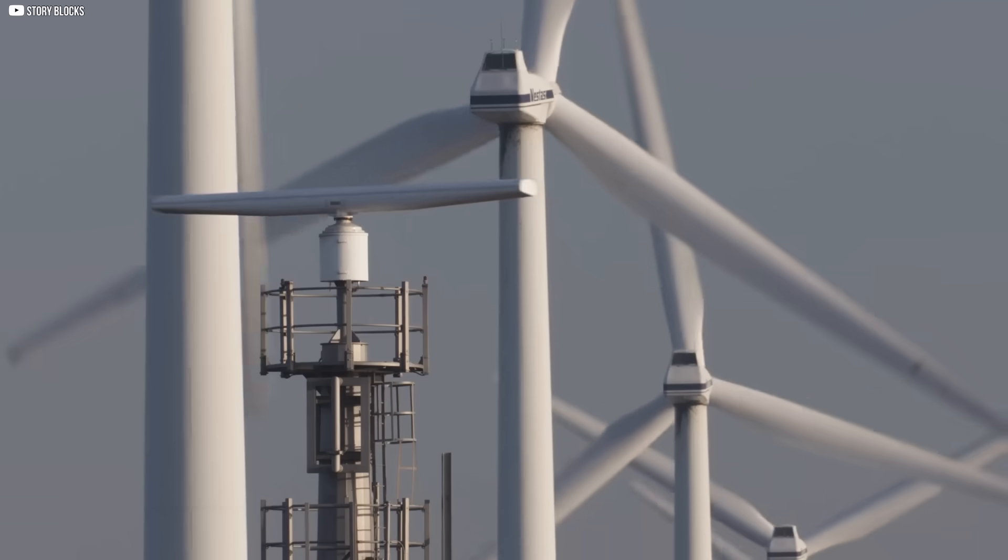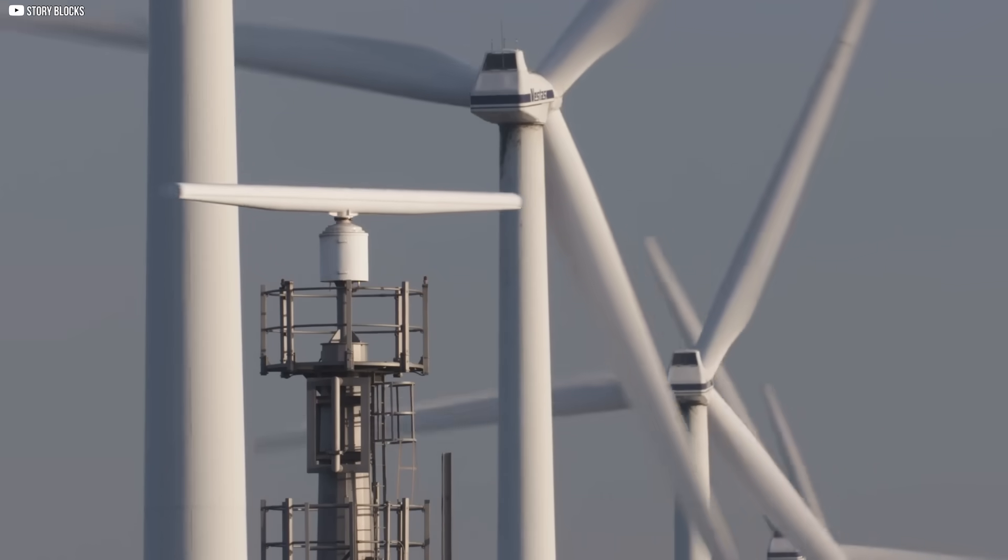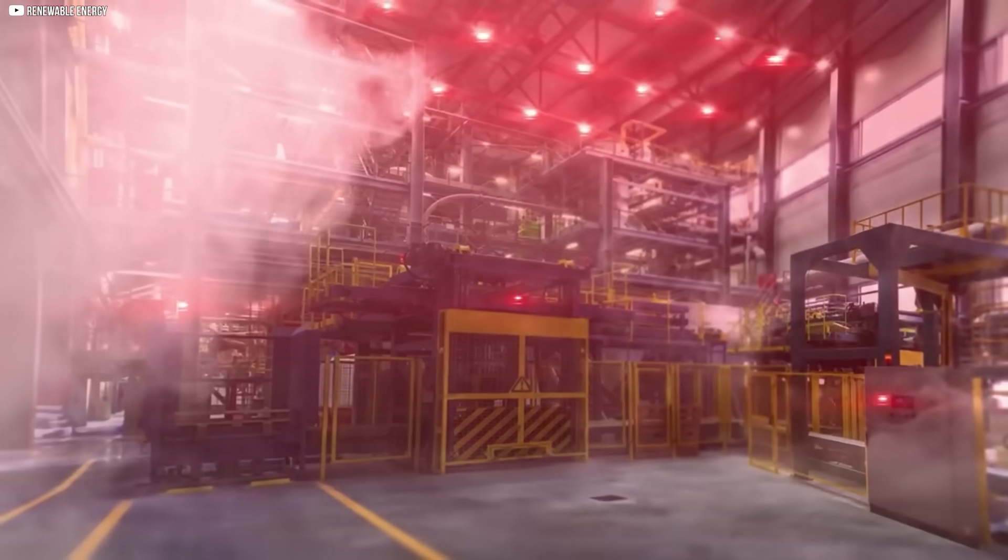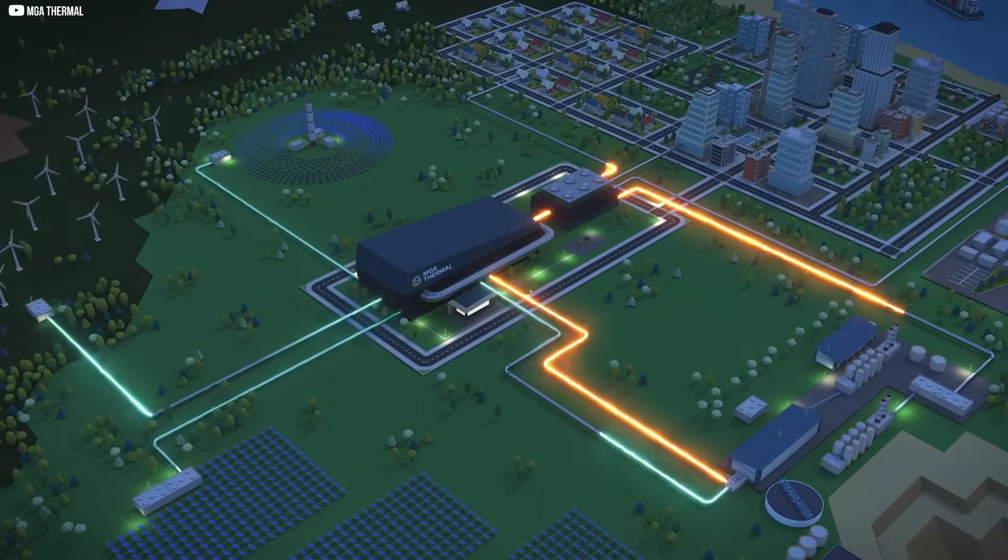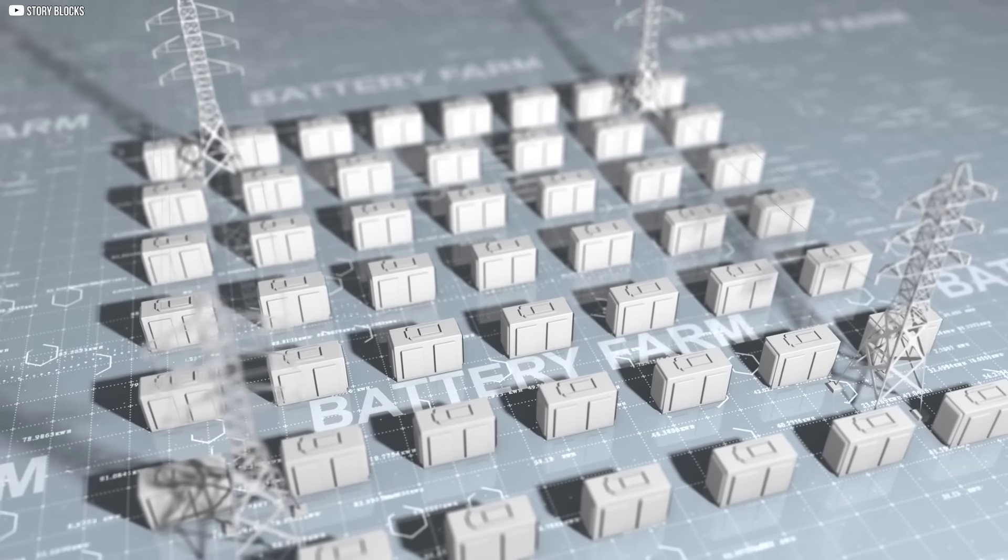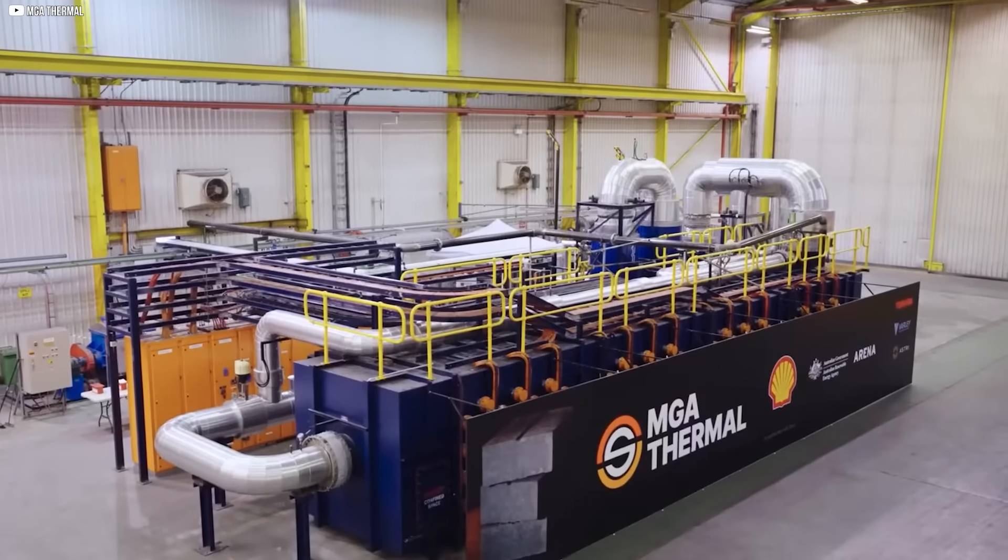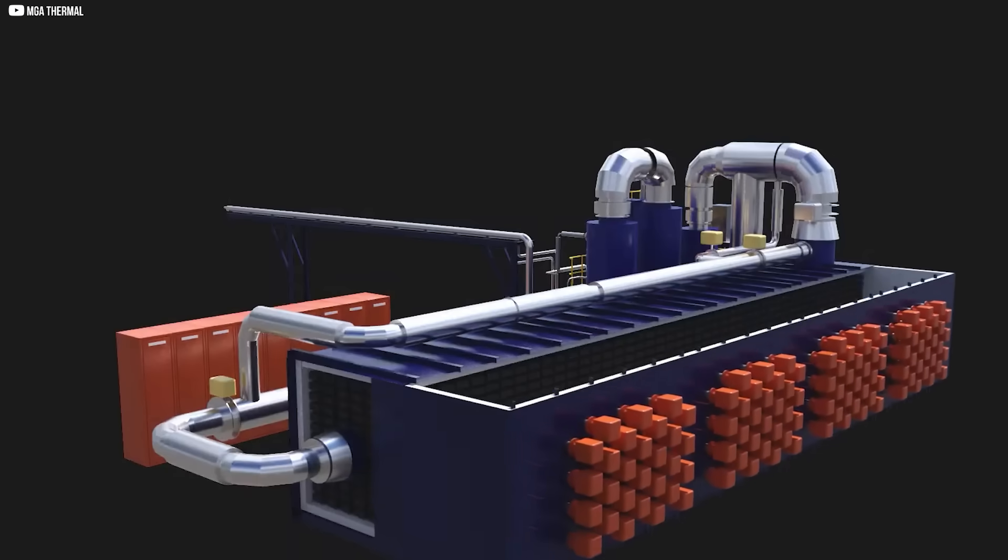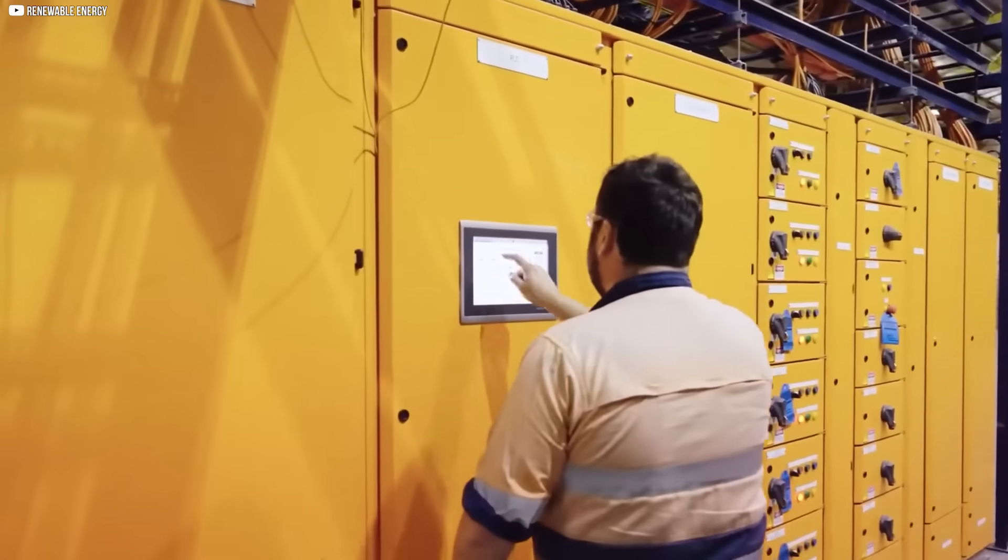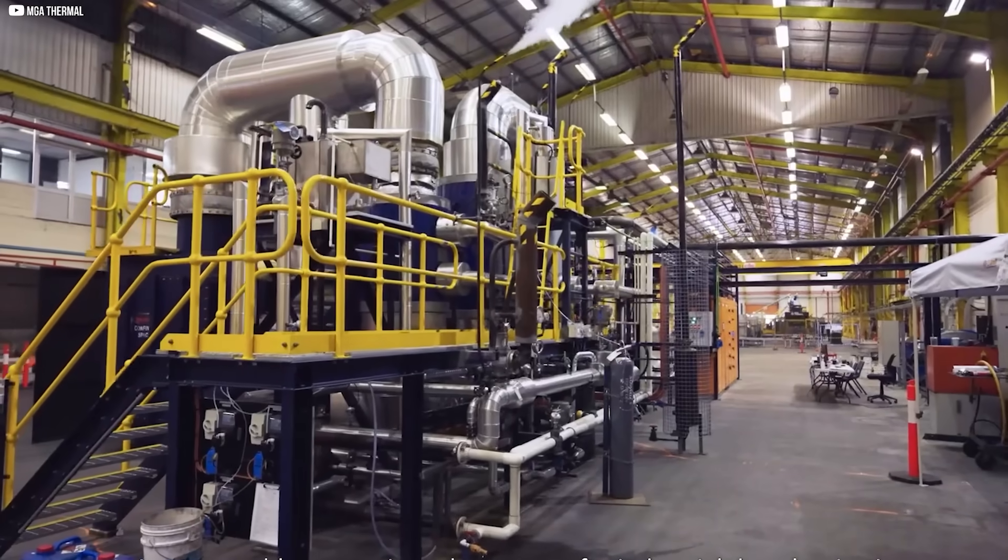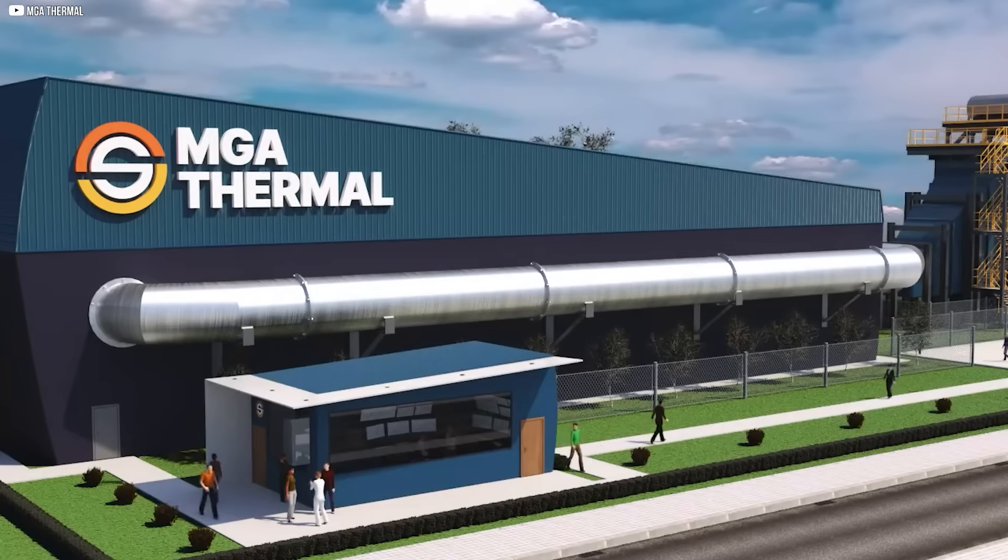And it's not just heat. In theory, the steam can power turbines and generate electricity. Less efficient? Yes. But possible. That flexibility matters. In a grid full of unpredictable renewables, being useful in more than one way makes you harder to ignore. MGA wasn't just back. It was working. Quietly. Persistently. And for the first time, people outside the company began to notice.